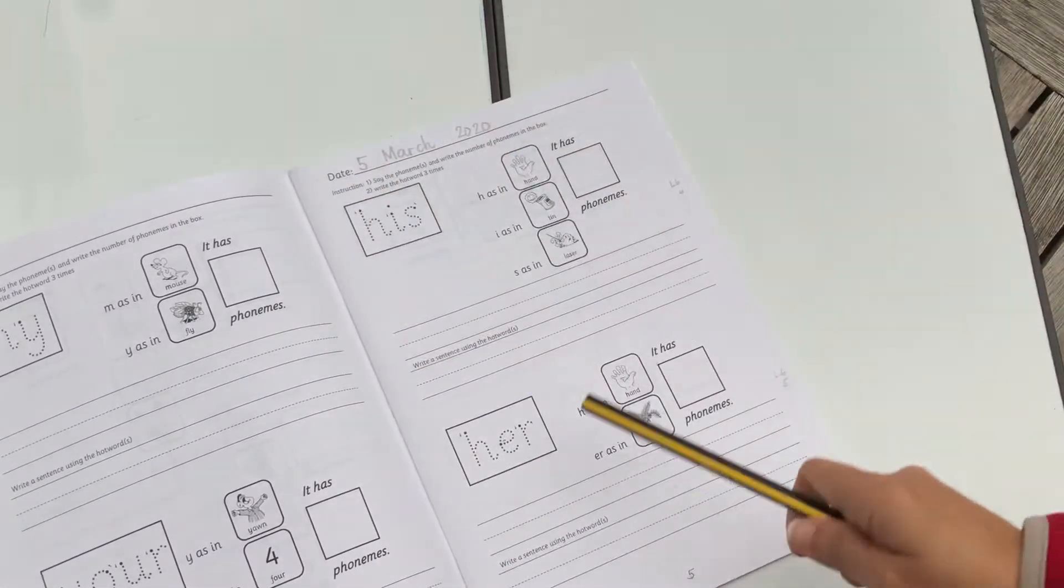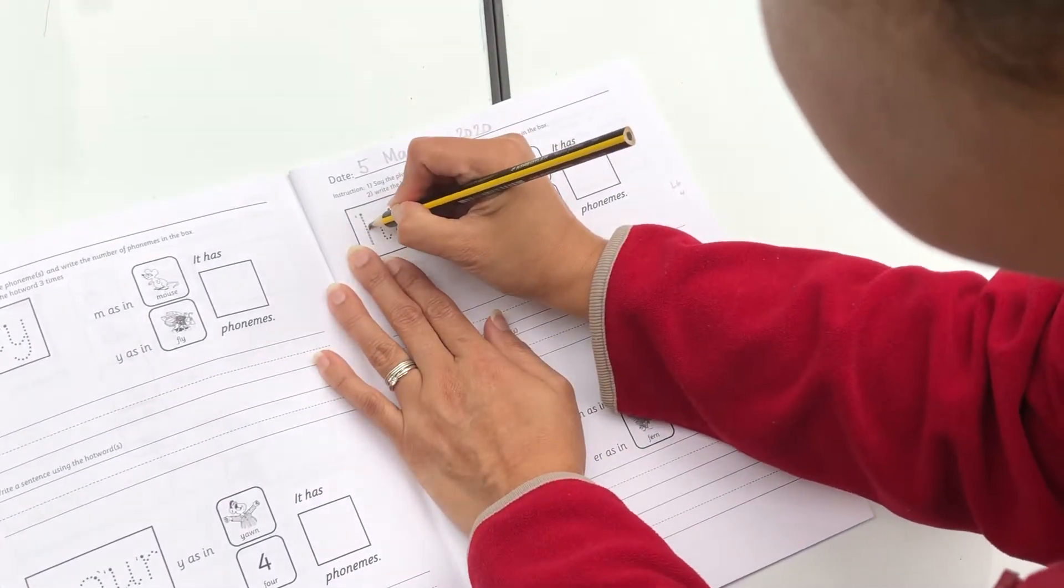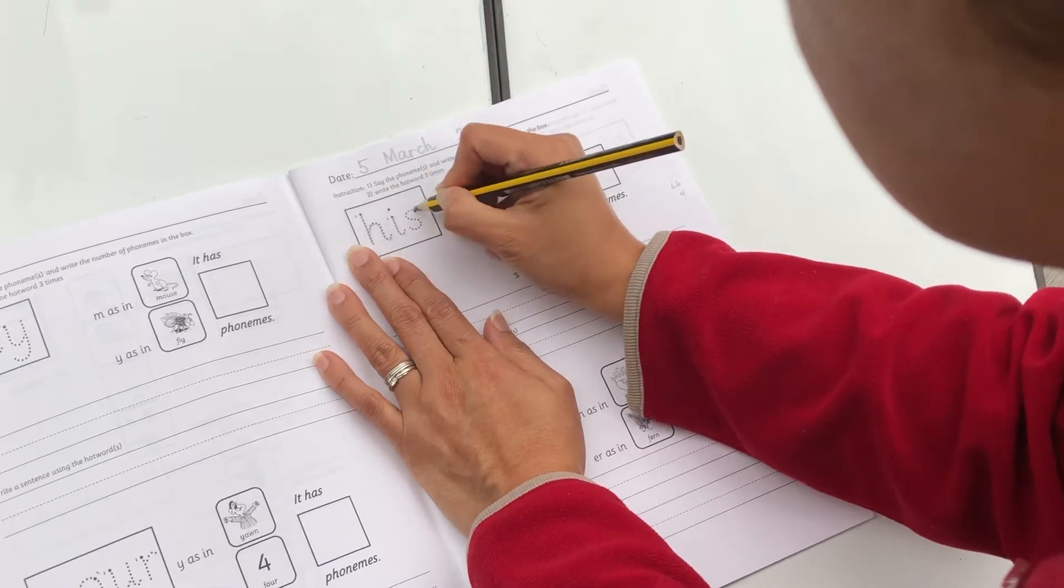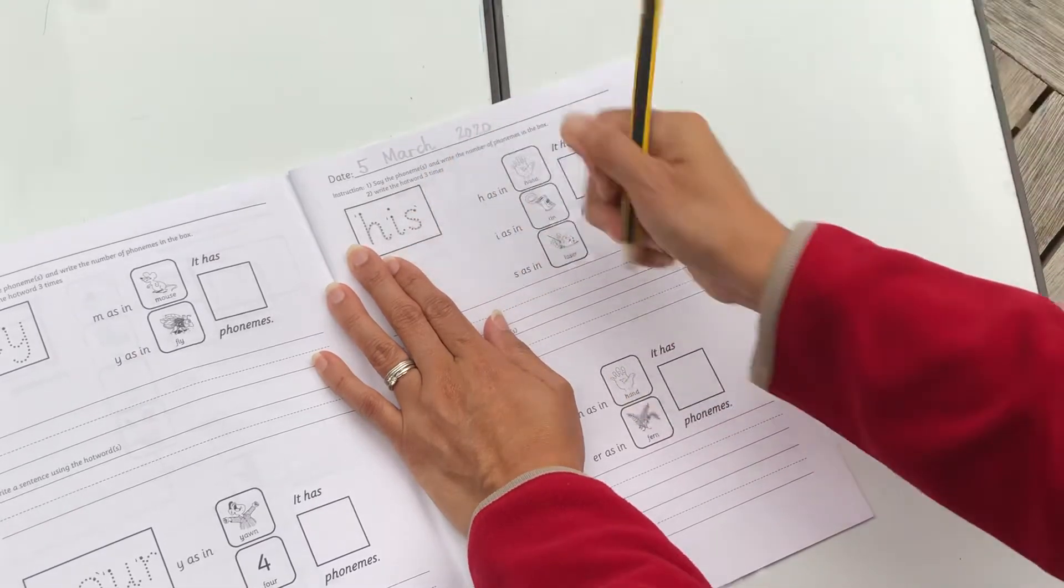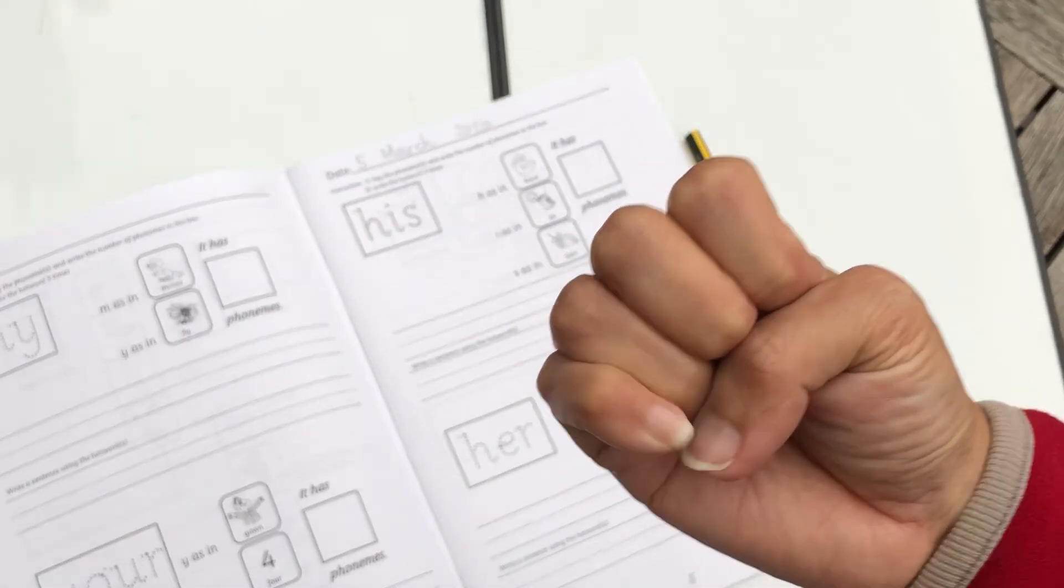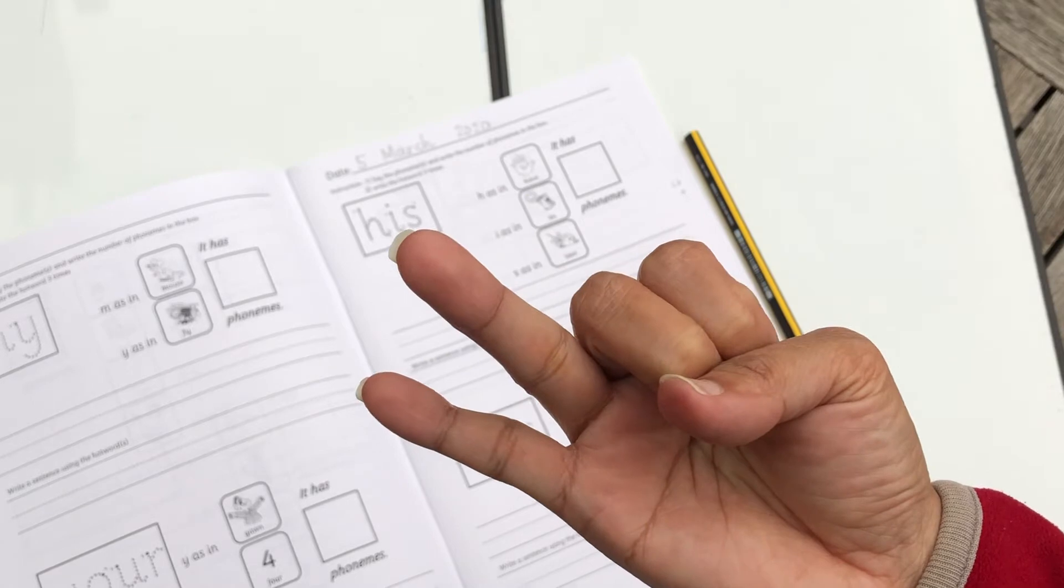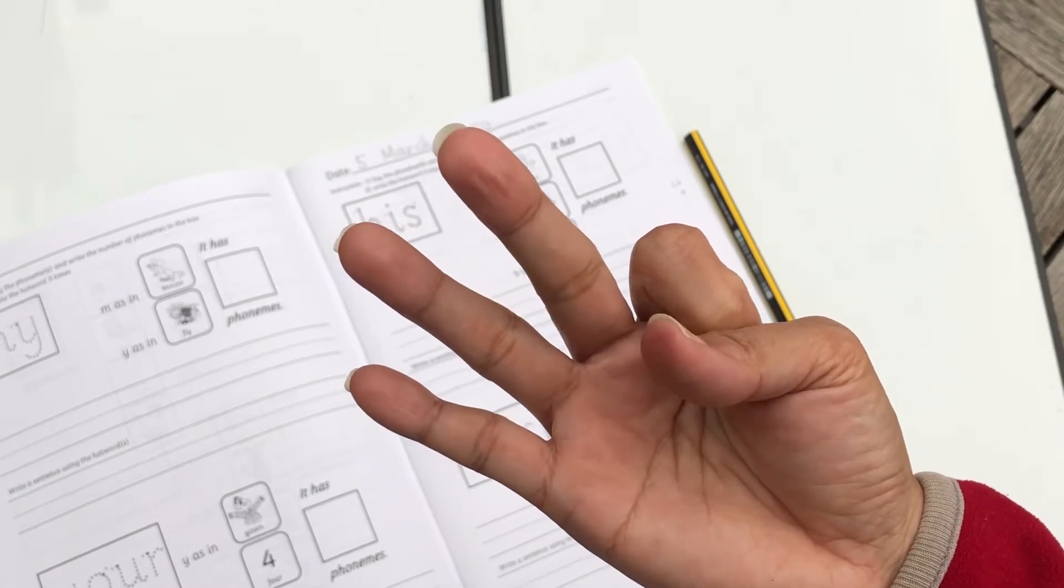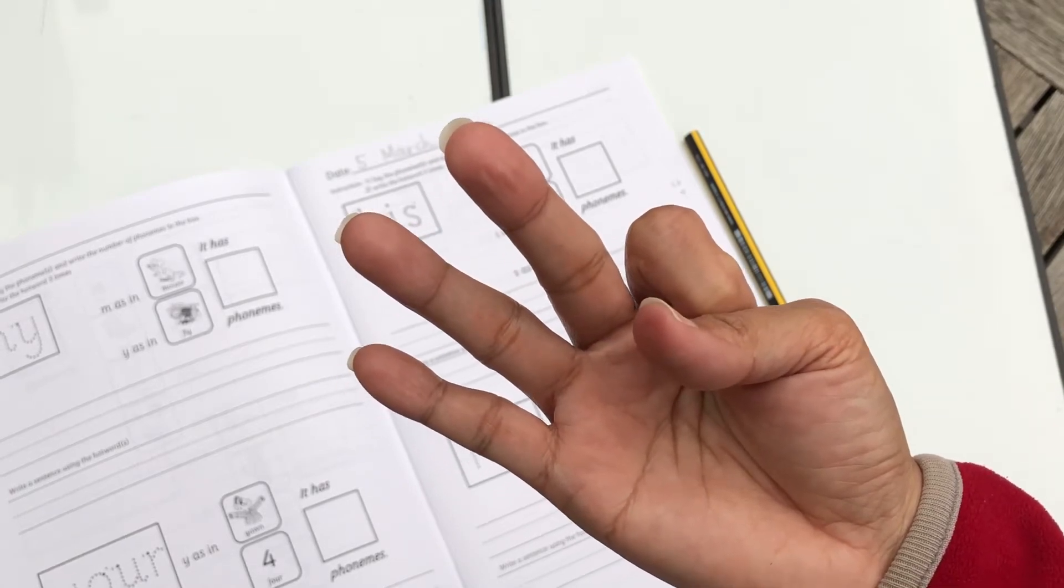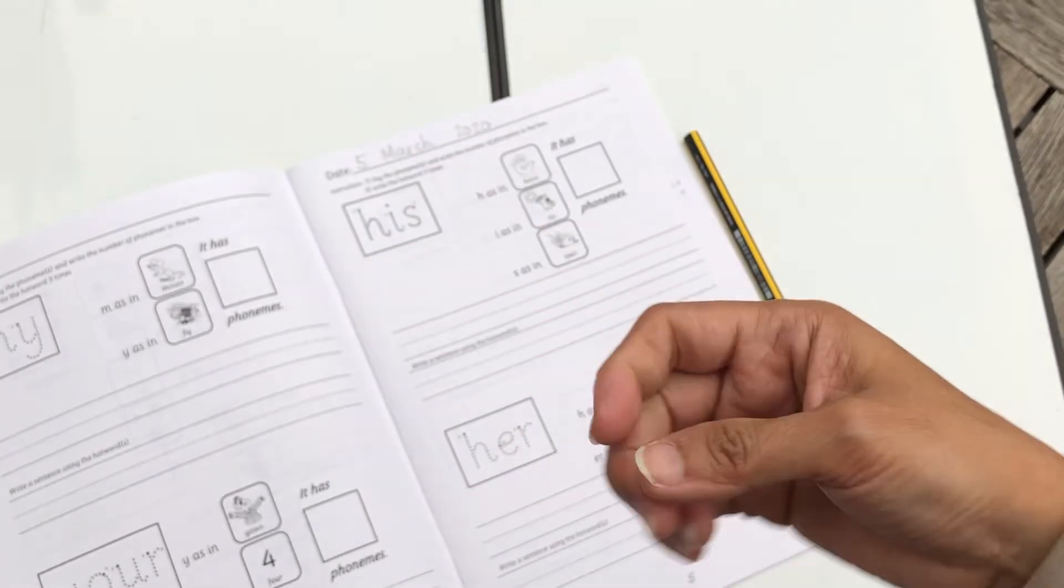So now his. Trace his. And then, how many phonemes do you hear? His. H as in the h in hand, i as in the i in tin, and s as in the s in laser. His. How many? Three. Good.